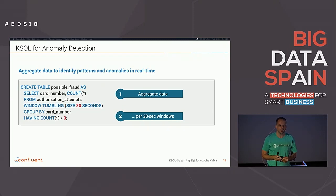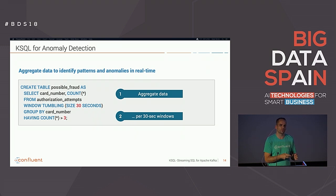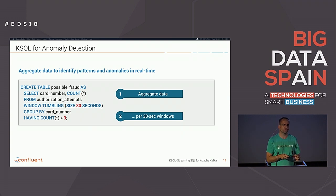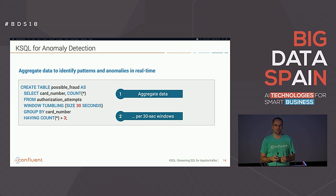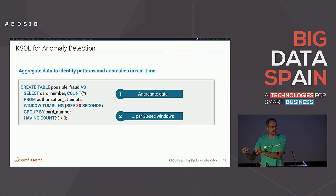The last use case is anomaly detection. In this example we aggregate data using 30-second windows — we get all payments, the credit card number, and count them. If within 30 seconds we have three or more payments by the same credit card number, we send an alert to another system. This shows how you can build powerful stateful queries with KSQL — it's not just about streaming ETL or filtering single messages; you can also aggregate data and build stateful applications.